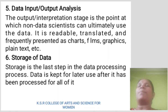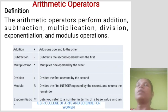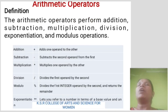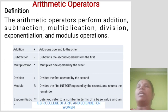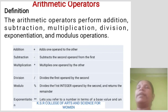Arithmetic operators. The arithmetic operator performs addition, subtraction, multiplication, division, exponential, and modulo operations. Addition: adds one operand to another. Subtraction: subtracts the second operand from the first. Multiplication: multiplies one operand by the other. Division: divides the first operand by the second. Modulo: divides the first integer operand by the second and returns the remainder. Exponential: refers to the number of times a base value is used in an operation.